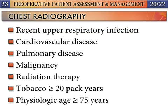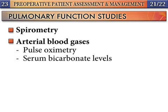Preoperative chest radiography may identify abnormalities that may lead to delay or cancellation of the planned surgical procedure or modification of perioperative care. Routine testing in a population without risk factors can lead to more harm than benefit. Preoperative chest radiography is indicated in patients with a history or clinical evidence of active pulmonary disease, and may be indicated routinely only in patients with advanced age. Pulmonary function tests can be categorized into spirometry and arterial blood gas analysis. With the advent of pulse oximetry, the need for preoperative arterial blood gas determinations is less important. A normal serum bicarbonate level virtually excludes the diagnosis of carbon dioxide retention.